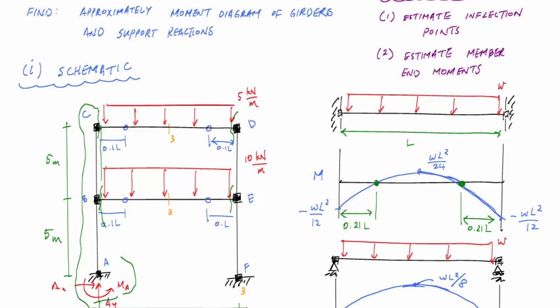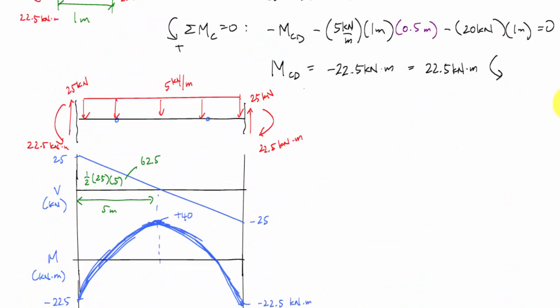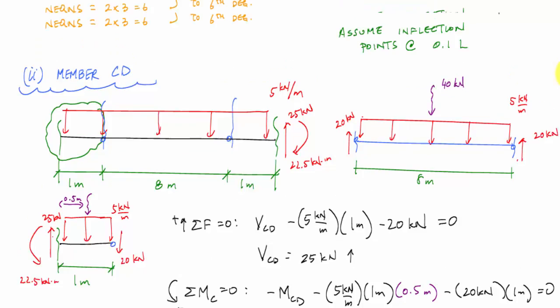So the first thing I might do to determine the reactions is actually isolate joint C. So I start with the free body diagram of joint C, which here's a joint, here's that end for member CB or CD. And if you remember in member CD, way over here, member CD, here is my end moment and end shear.